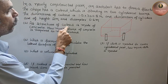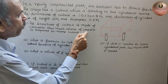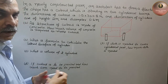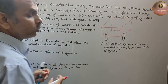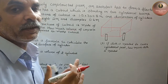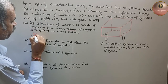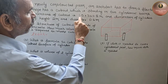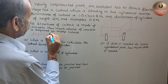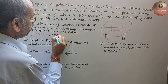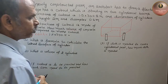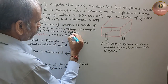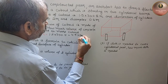As the structure of the cuboid is made of concrete, how much volume of concrete is required to make the cuboid? The volume of cuboid is L × B × H. So that is 1.5 × 3 × 0.5. First, 1.5 into 3 is 4.5, and 4.5 into 0.5.